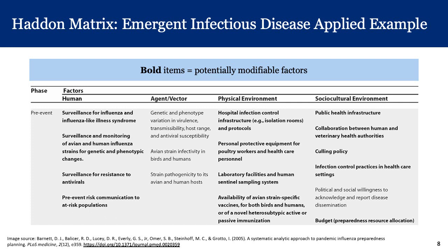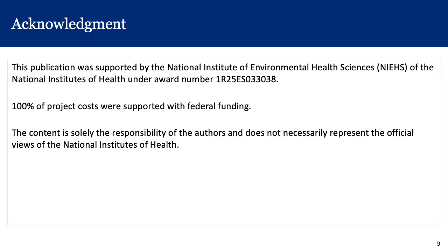This slide presents a screenshot of the pre-event phase of the Haddon Matrix for pandemic influenza. Anything in bold indicates items most addressable through public health intervention. An important take-home is that the least modifiable column is the agent or vector column — there's not much we can do about a given strain of avian flu. But there is a lot we can do in the surrounding columns: human factors, physical environment, and sociocultural environment in the pre-event phase.